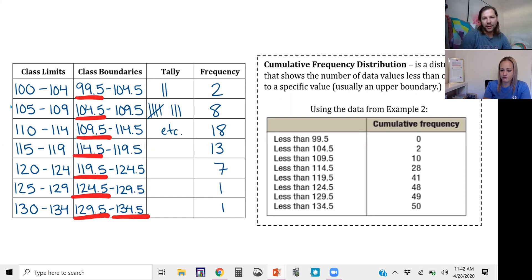So you just get two. Two out of the 50, I guess that's four percent or less than 104.5. And then this next value which is 10, that's 2 plus 8, so that's just the sum of the two classes that were less than 109.5. So that's where we got this 10.